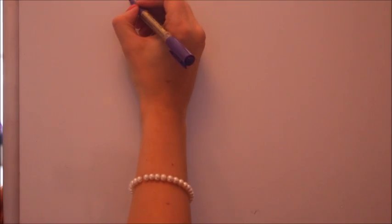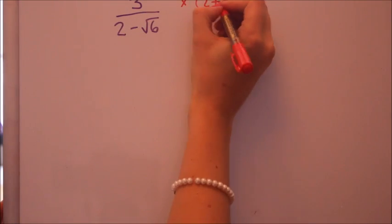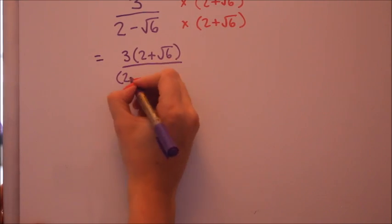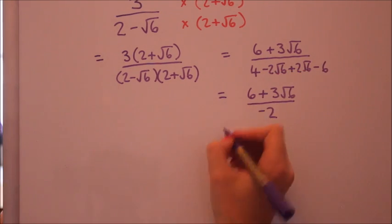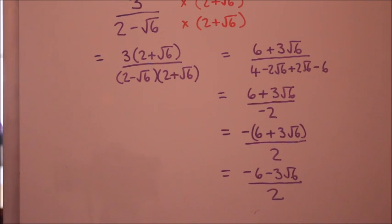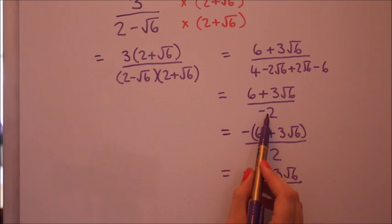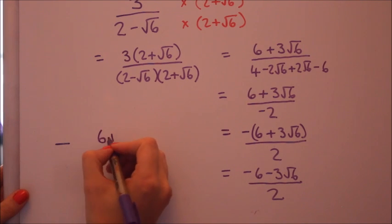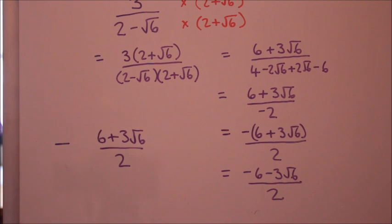Your turn again. Have a go at rationalising this one. Well done if you got the same as me. You might have written it slightly differently. You can leave the minus sign on the bottom, it's just not very tidy. I put the minus sign on the top and expanded that out. Or what you could do is put it just at the beginning of the fraction. Well done if you got that. Please do go and keep practising these skills. Have fun!